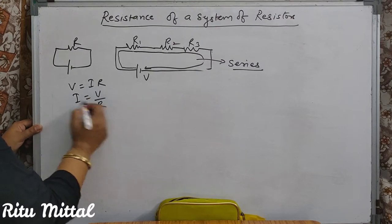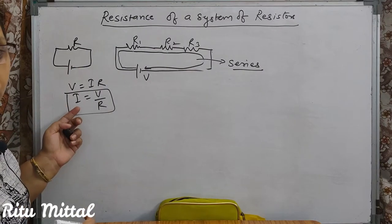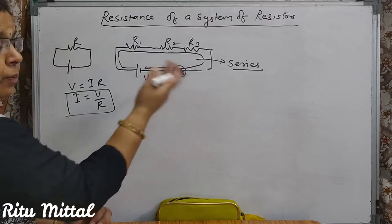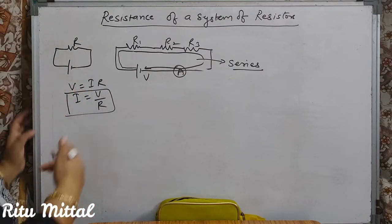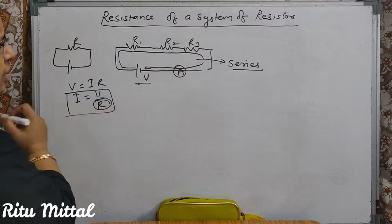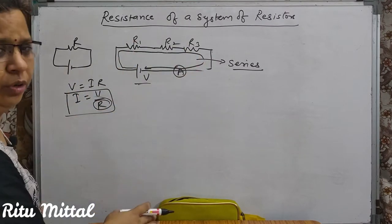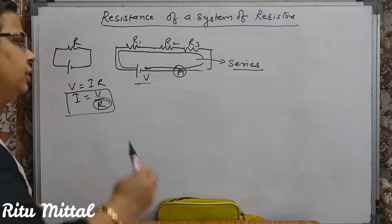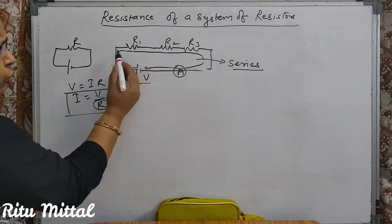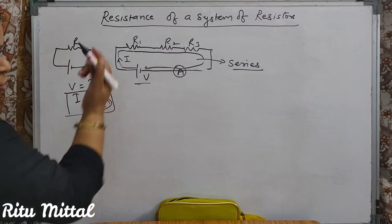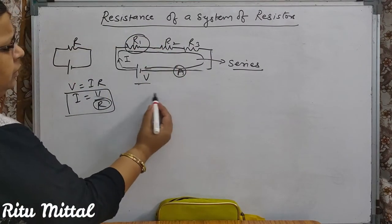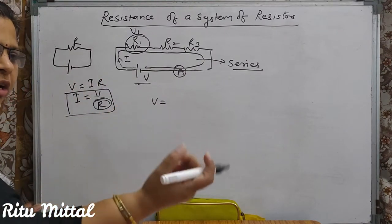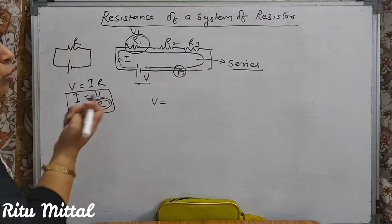What does current equal? V by R. If you have to know the resistance, then you have to know the current. All are series connected. Here the current I will flow. Here there will be a voltage drop — this is the voltage drop. When resistance comes in the way, the voltage drop occurs.